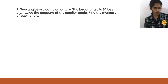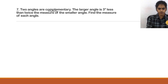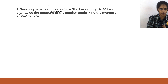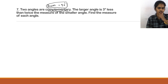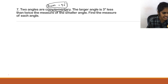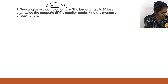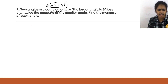Question 7: Two angles are complementary. Complementary angles means the sum of the two angles is 90 degrees. The larger angle is 3 less than twice the smaller angle. This is similar to the supplementary angle question we did in question number 3 of the same exercise.